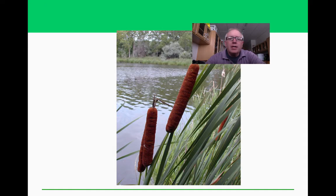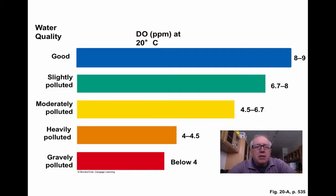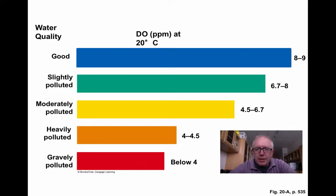Cattails are mentioned as natural indicator species — when they show problems, there may be problems in the water. Dissolved oxygen readings give you baselines for what is healthy versus unhealthy water.